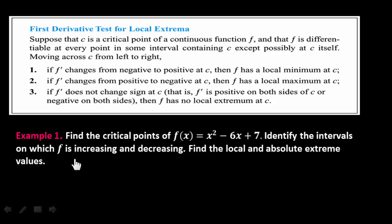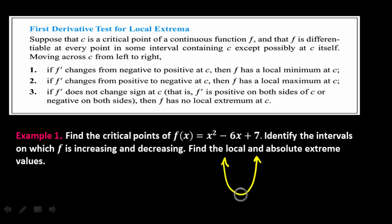Local max, local min, absolute max, absolute min. This is a quadratic function and it opens upward because the coefficient of x² is positive 1, so it looks like a parabola. The question is where does the vertex occur — what are its coordinates — so that we would know the interval for which it's decreasing and increasing. Remember when you talk about increasing or decreasing, you have to start from the left going to the right.